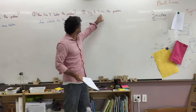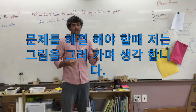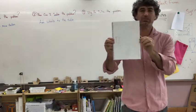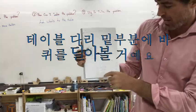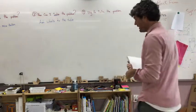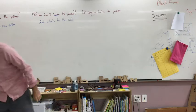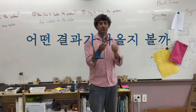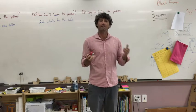When I try to solve the problem, the first thing I like to do is draw pictures. So I drew some pictures of ways that I was going to add wheels. I got the measurements and everything I might need, thinking I'm going to put some wheels like this on the bottom of my table. So let's see how it went.